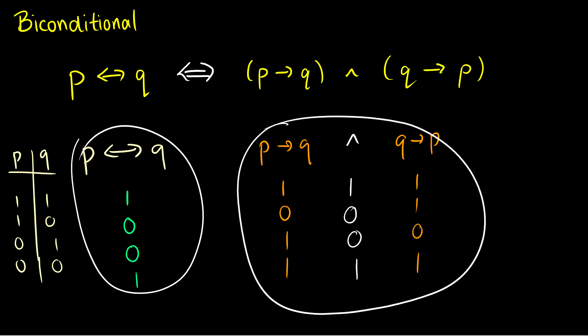The biconditional is actually a conjunction of two conditionals, which makes sense linguistically: P arrow Q is 'P only if Q,' and Q arrow P is 'P if Q.' So the biconditional gives us 'P only if Q' and 'P if Q,' which together is 'P if and only if Q.'